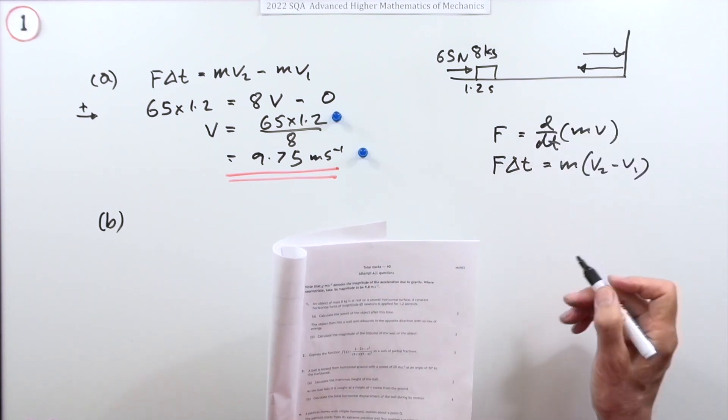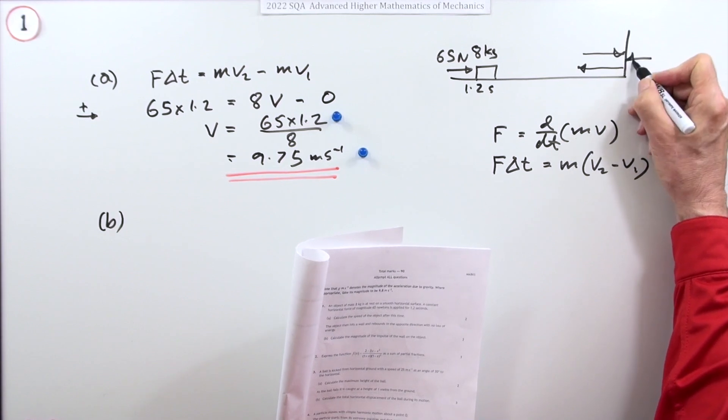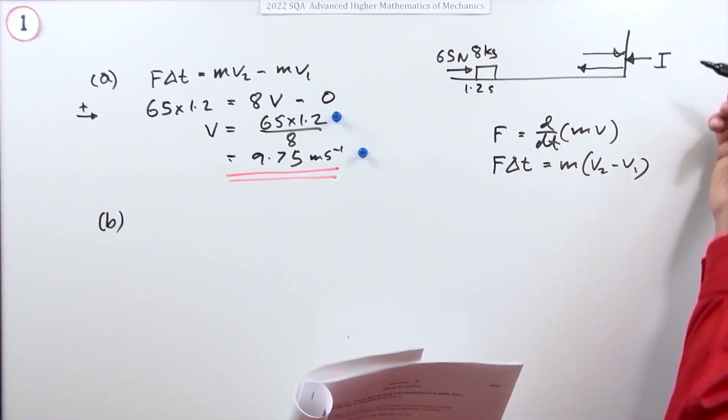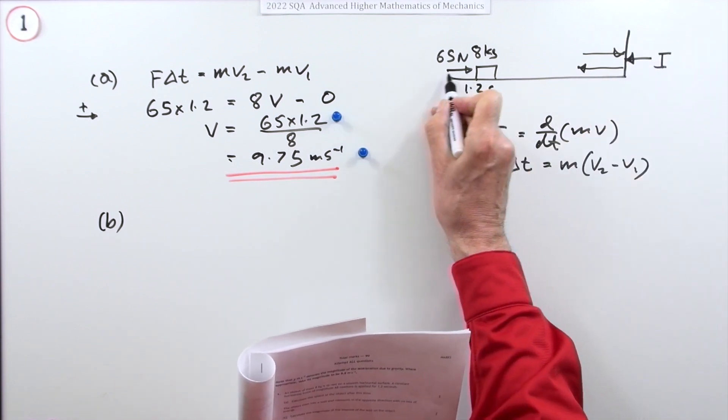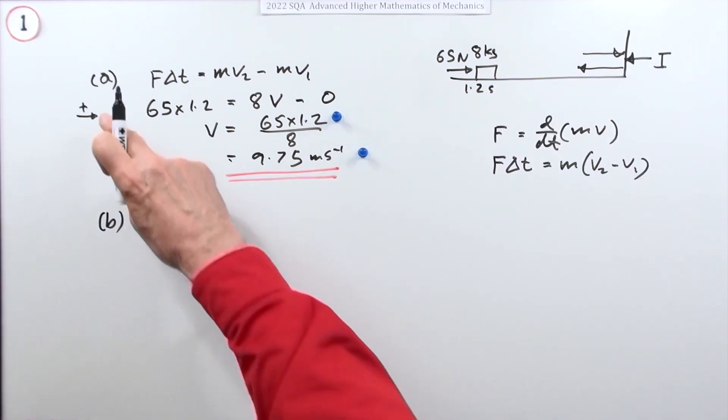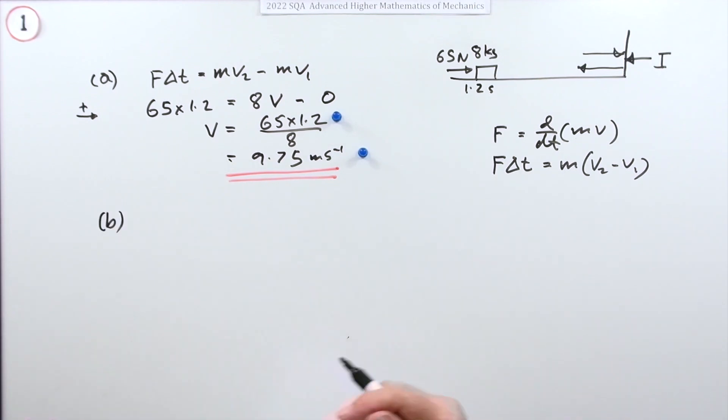Calculate the magnitude of the impulse of the wall on the object. So the impulse is here—notice the direction of it. This impulse is acting in that direction whereas the original impulse was acting in that direction.